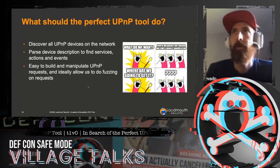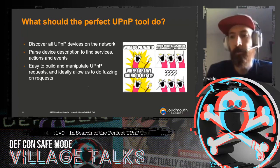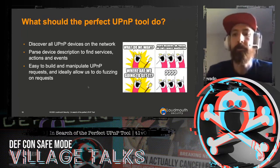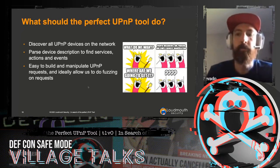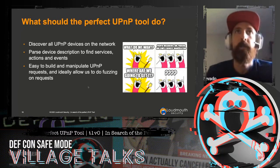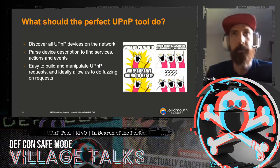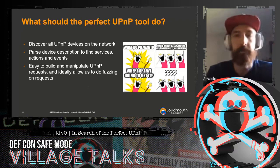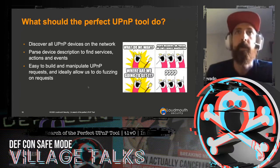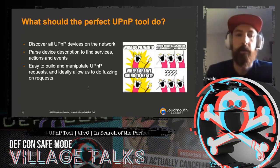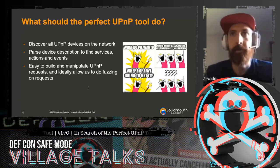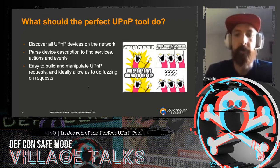When I went looking for a UPnP tool, there are basic things I'd want it to do. First, discover all the devices on my network automatically. Once it finds them, it should parse the description and find services, actions, and events — XML is straightforward to parse. And then be able to build and manipulate UPnP requests in a simple way, and ideally fuzz that interface.